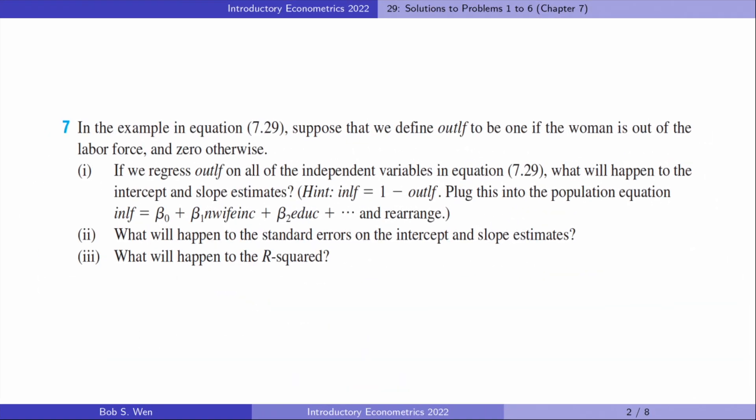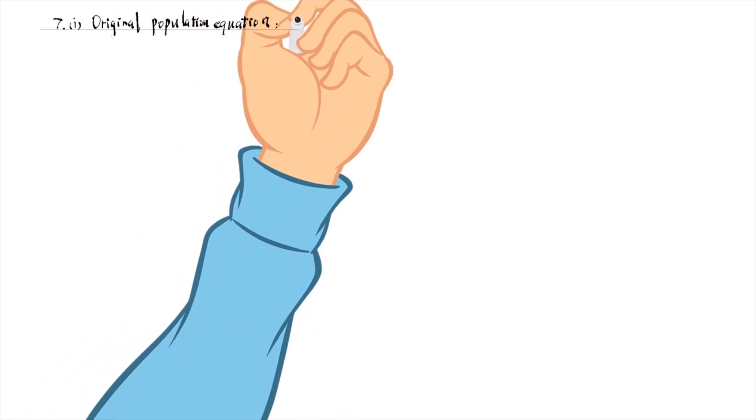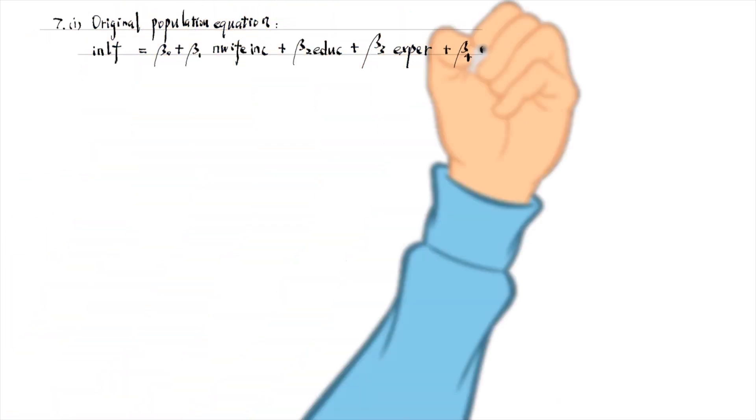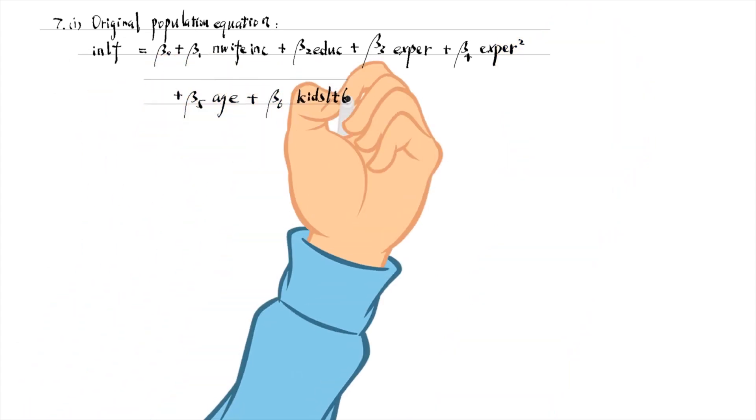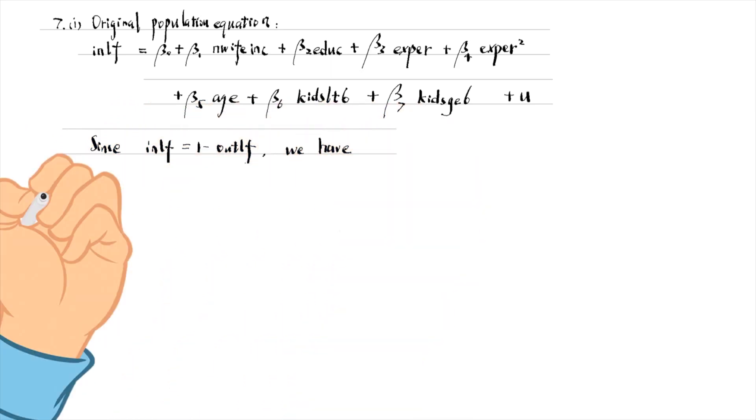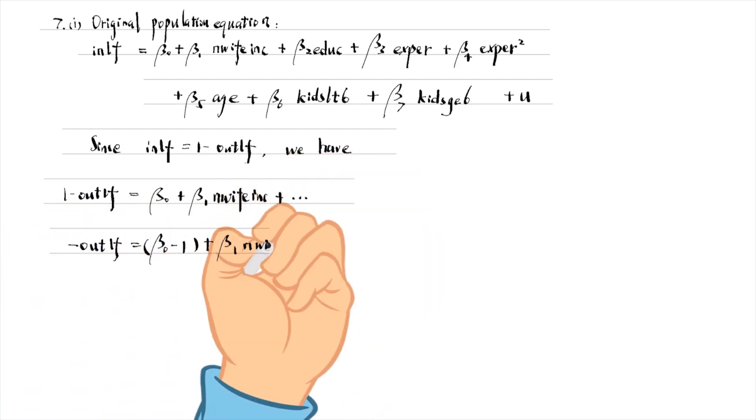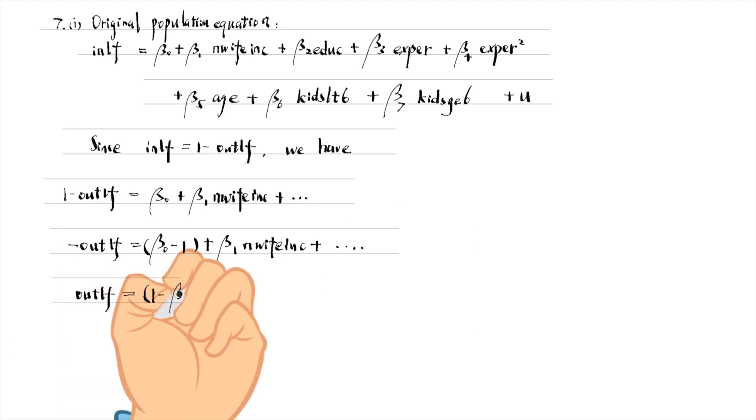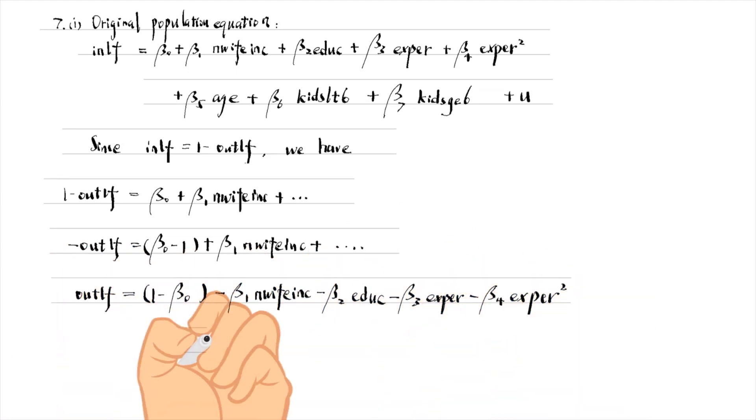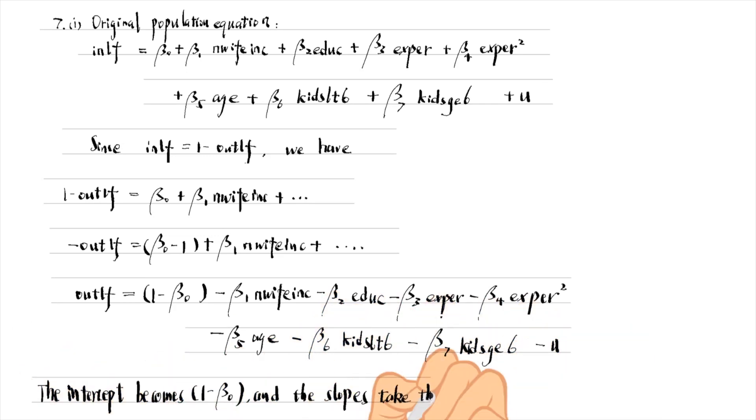For problem number 7, we can write down the original population equation and replace in the labour force with 1 minus out of the labour force. Rearranging the terms, we have the new equation. We find that the intercept becomes 1 minus beta 0. The slope coefficients take the opposite sign of the old ones.